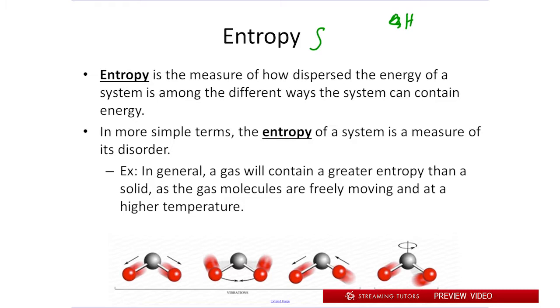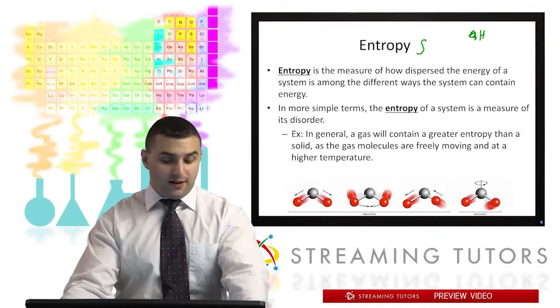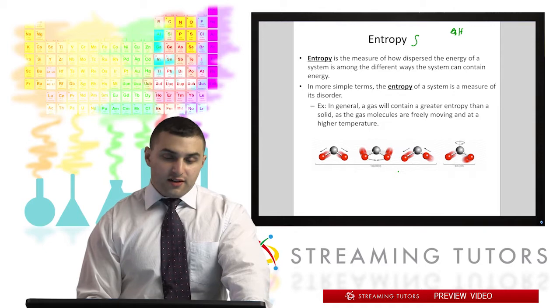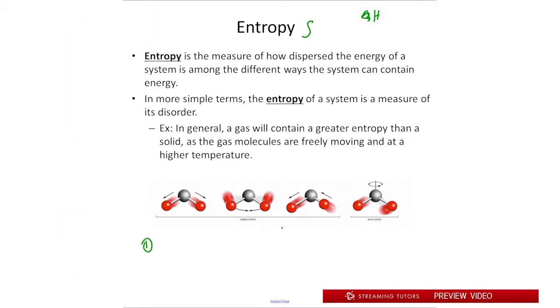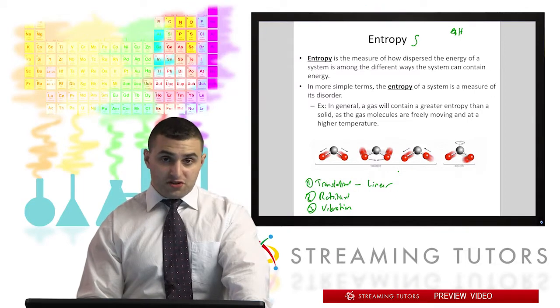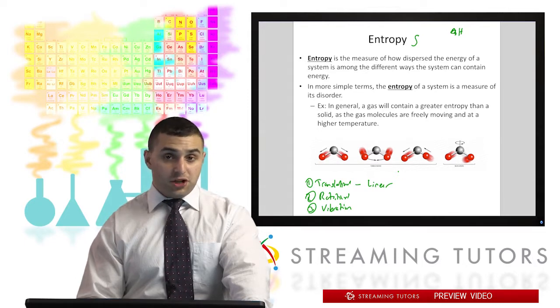And we can define entropy as the measure of how dispersed the energy within a system can be in terms of different ways it can contain energy. So that's a bit of a mouthful. But what we can think of that as is saying when we have a molecule, we know that we have three main types of motion. There's translational motion, there's rotational motion, and there's also vibration. So translational motion is just a linear movement of the molecule. Rotation and vibration, you can see examples in the picture. So what entropy essentially is, is looking at the number of ways that energy can be contained within the different kinds of energies of vibration and rotation.